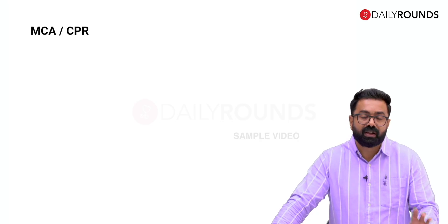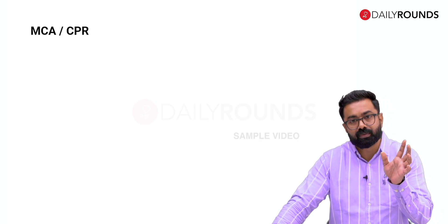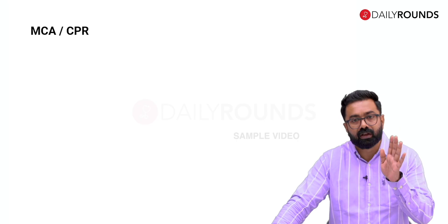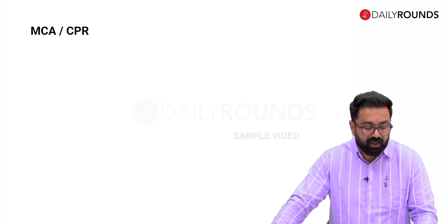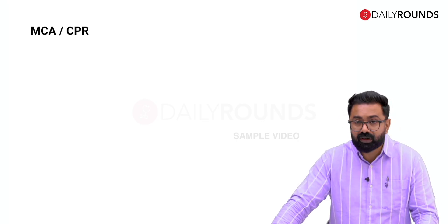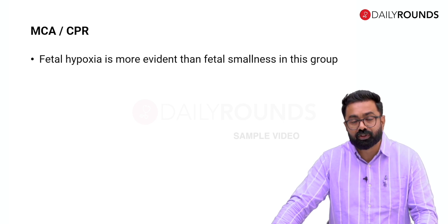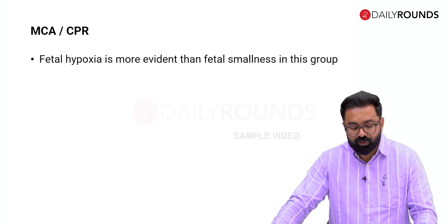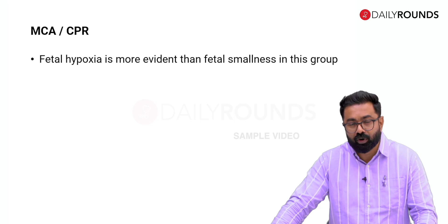When discussing Doppler in FGR in SGA babies, the umbilical artery is going to be abnormal in a lot of these cases. But in appropriately grown fetuses, the much more reliable tool is the MCA or the CPR, because here fetal hypoxia is much more evident than smallness.